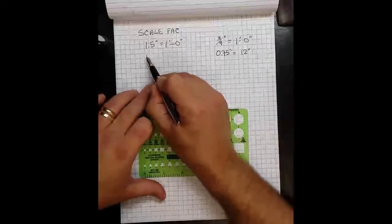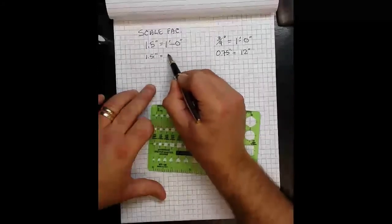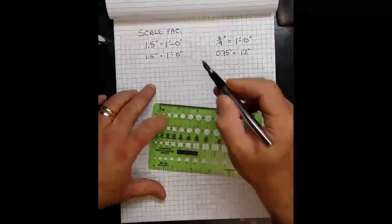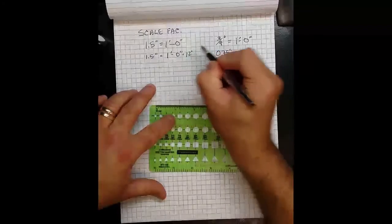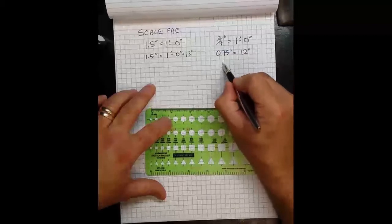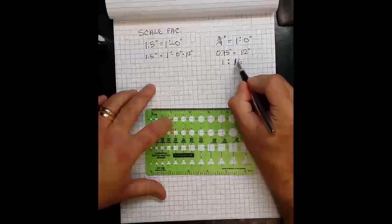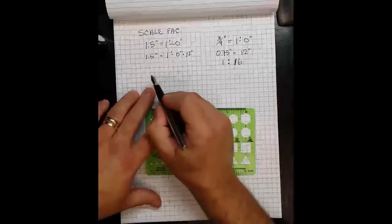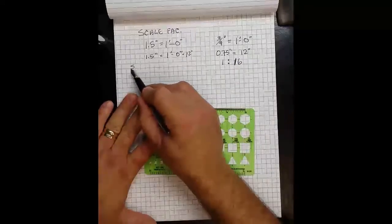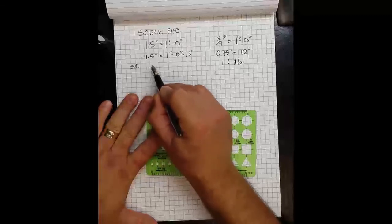I'm going to also come over here and sketch these out. And if I divide both sides just to get a ratio, then that will equal 1 to 16 as the scale factor. And then, which sometimes we'll abbreviate SF.